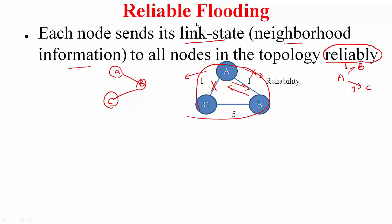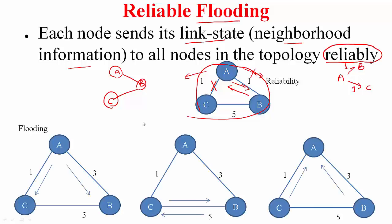The flooding is what is employed. Simple idea: you tell your neighbors the information you want to send and ask them to pass it on to their neighbors, so on and so forth. Finally, everyone will get to know. So here it is. A has some information to send, so it sends it to its neighbors B and C.